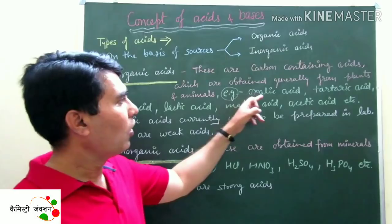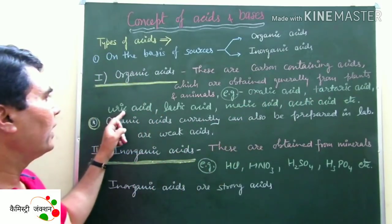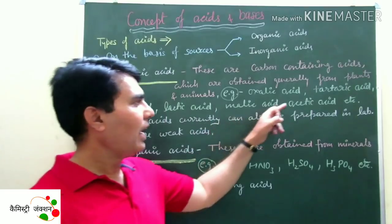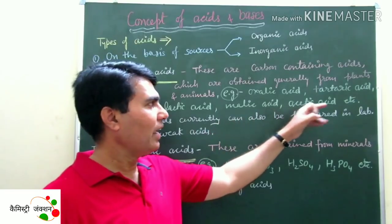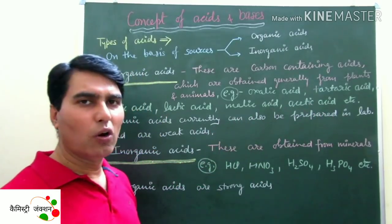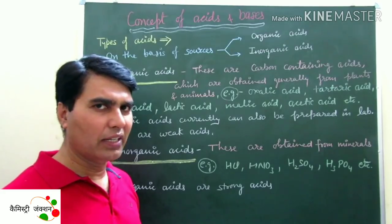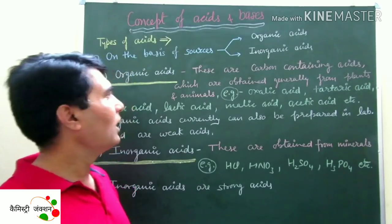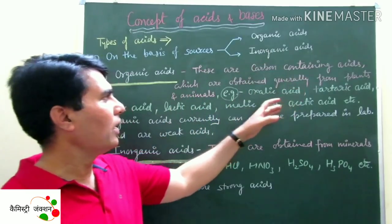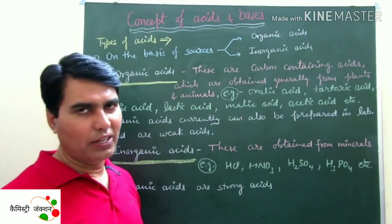Organic acids are obtained generally from plants and animals. Examples include oxalic acid, tartaric acid, uric acid, lactic acid, malic acid, acetic acid, etc.